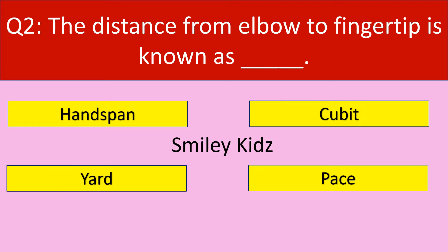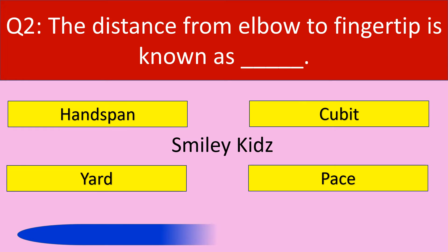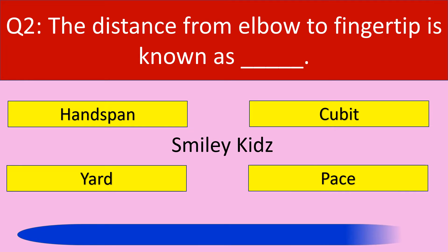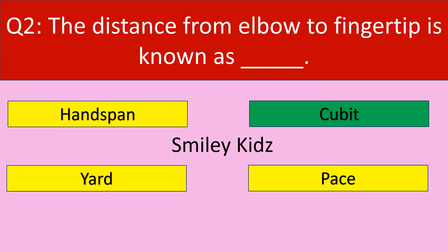Question number 2. The distance from elbow to fingertip is known as. Your options are handspan, cubit, yard, pace. Your time starts now. Time up. The correct answer is cubit. Cubit is the distance from elbow to the fingertip.